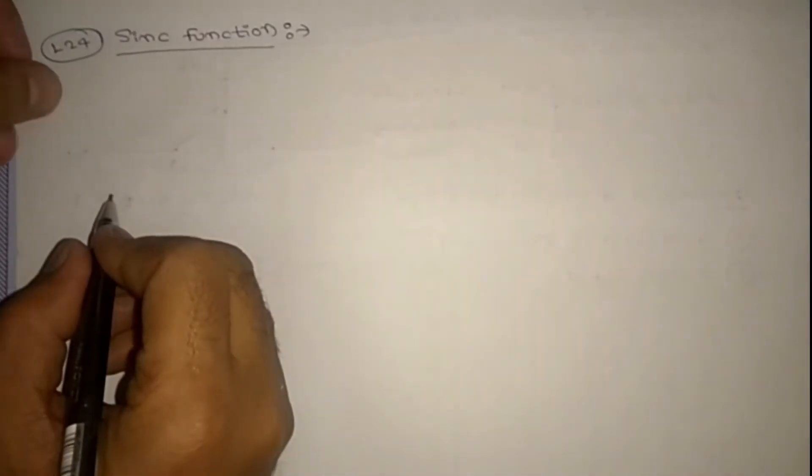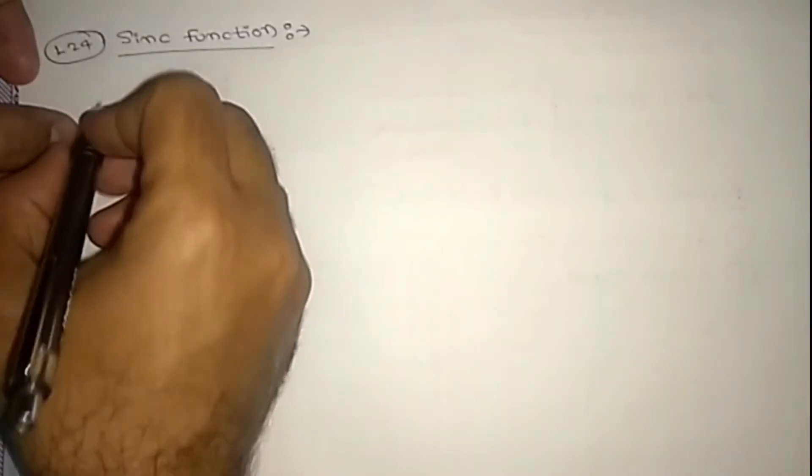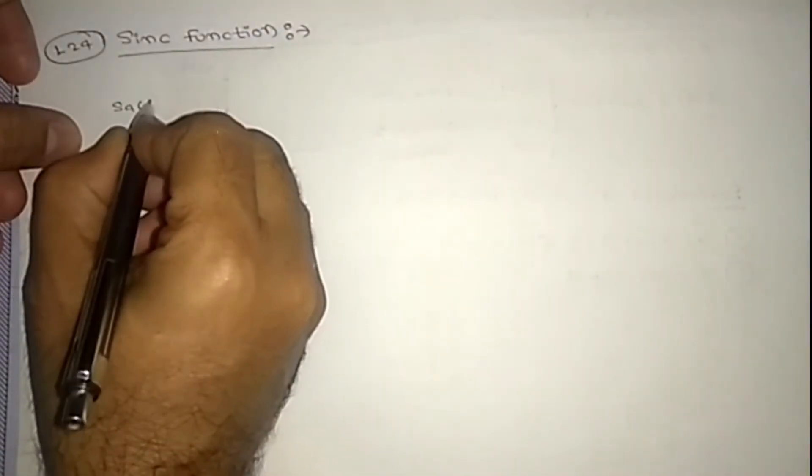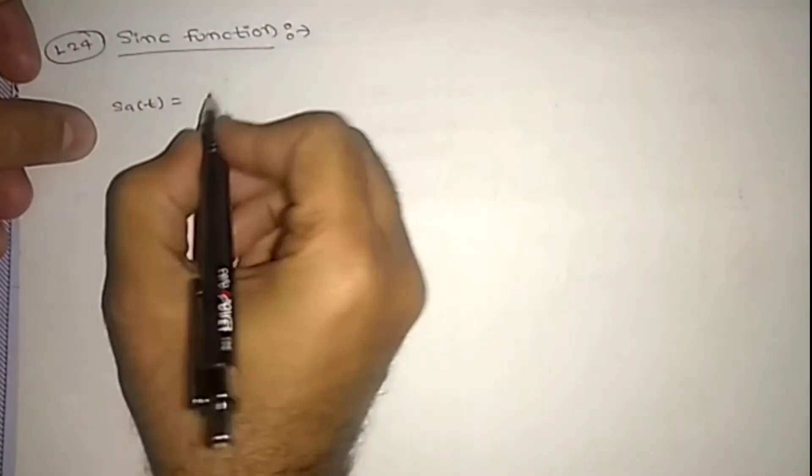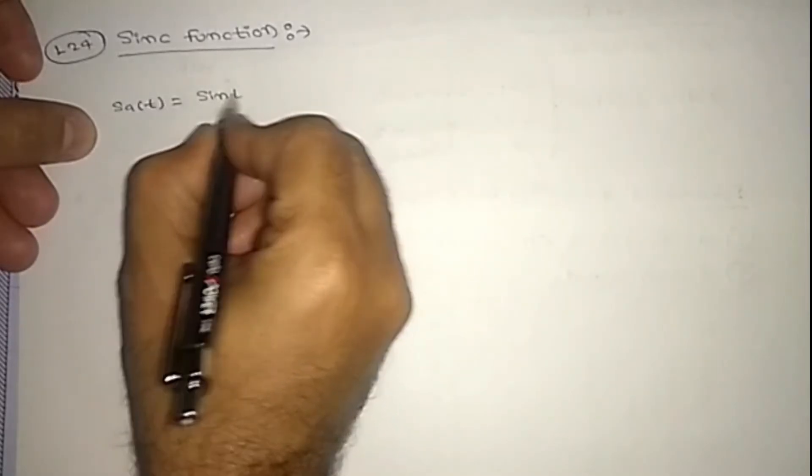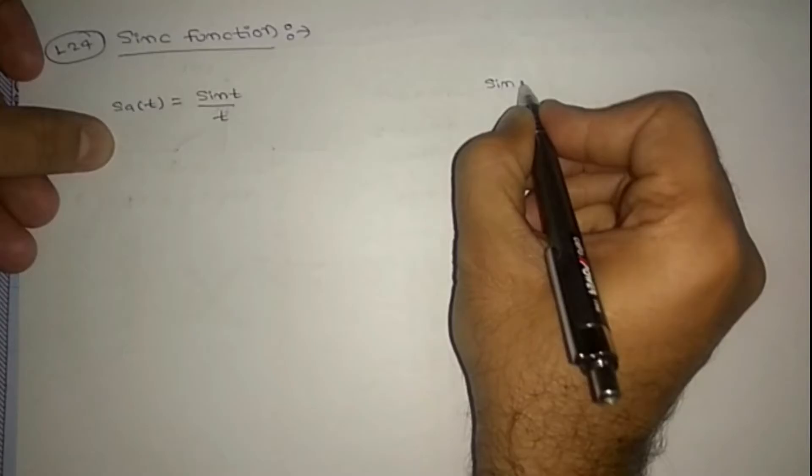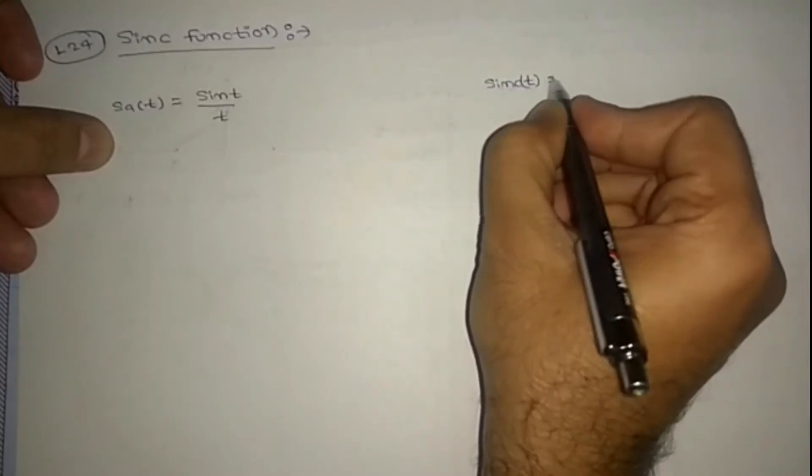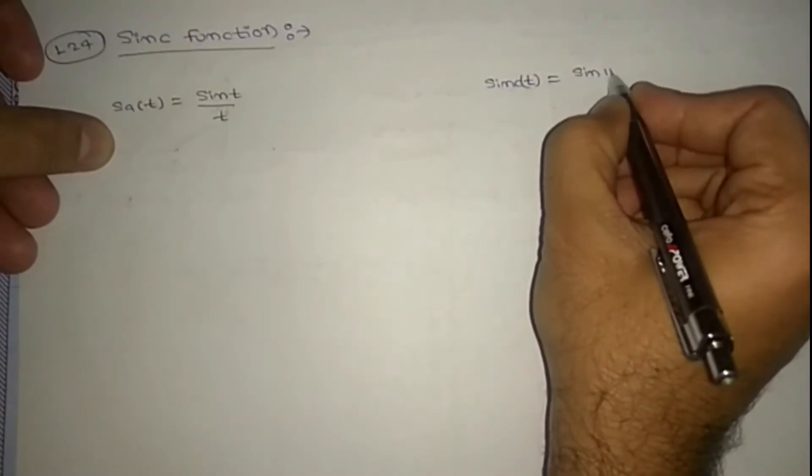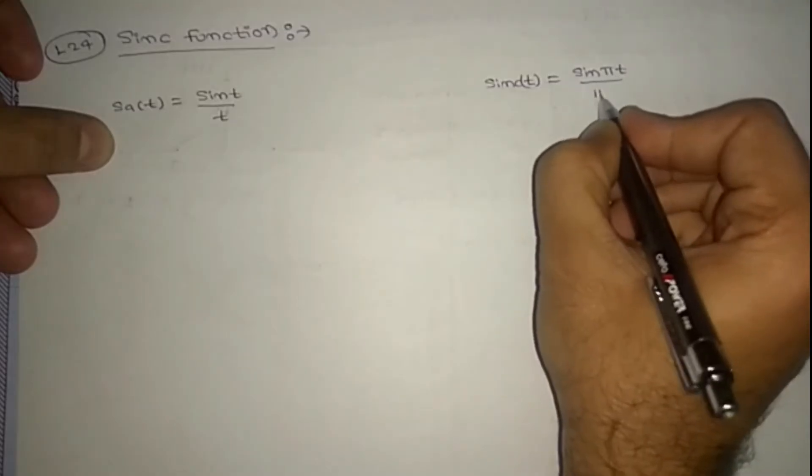Hi, welcome to my 24th lecture on sinc function. In this one, we have two equations. One is sa(t) equals sin(t) by t. One more is sinc(t) equals sin(pi t) by pi t.